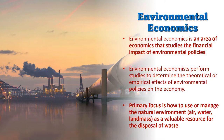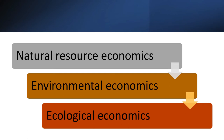Mill described environmental economics as involving land that has not only agricultural and extractive use, but also as a source of amenity values. Marshall described environmental economics as an analysis of externalities and market failures. So there are many kinds of views on what environmental economics deals with.